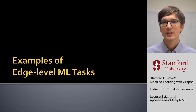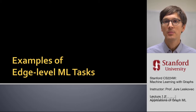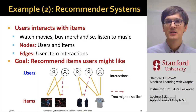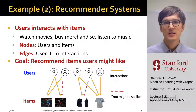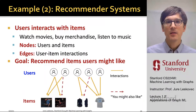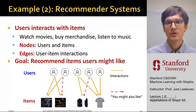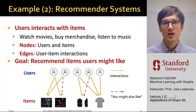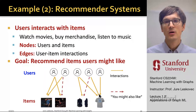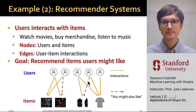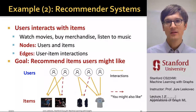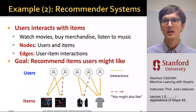Now we'll talk about edge-level machine learning tasks, where we are essentially doing link prediction or trying to understand the relationship between different nodes. The first example is recommender systems, where we think of users interacting with items — products, movies, songs, and so on. There will be two types of nodes: users and items, and there is an edge between a user and an item if the user consumed, bought, reviewed, listened to, or watched that item.